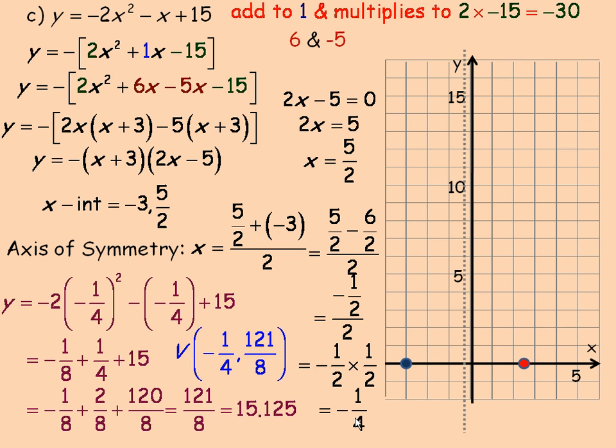So the coordinates of the vertex are negative 1 quarter, and then 121 over 8. So we can plot that point. There's the vertex right there. These are the x-intercepts, and so the parabola must look like this.